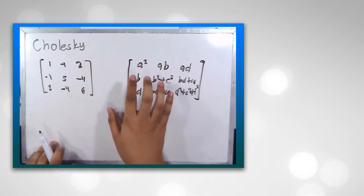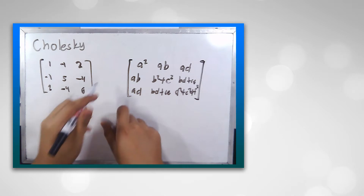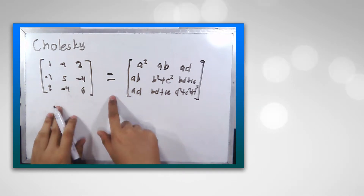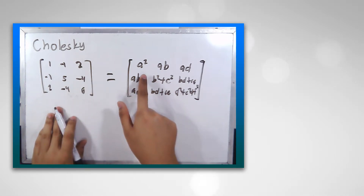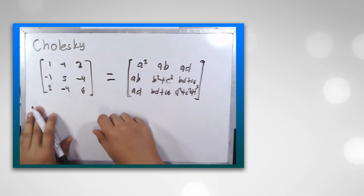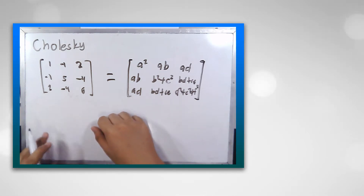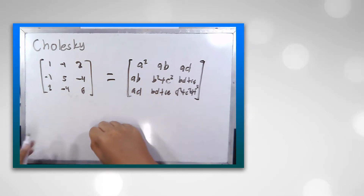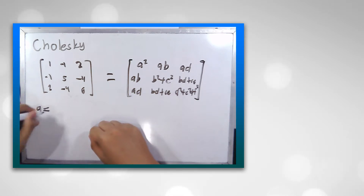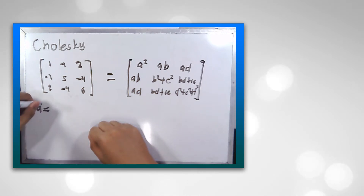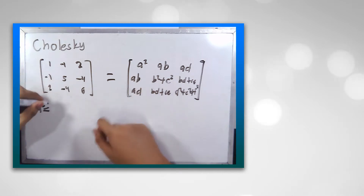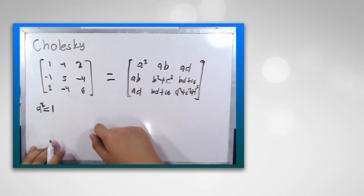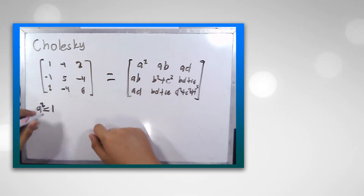So how are we going to find the values a to f? It is simple — we derive equations by manipulating the equivalence. Let's go first for a: a squared is equal to 1, therefore a equals the square root of 1, which is equal to 1.